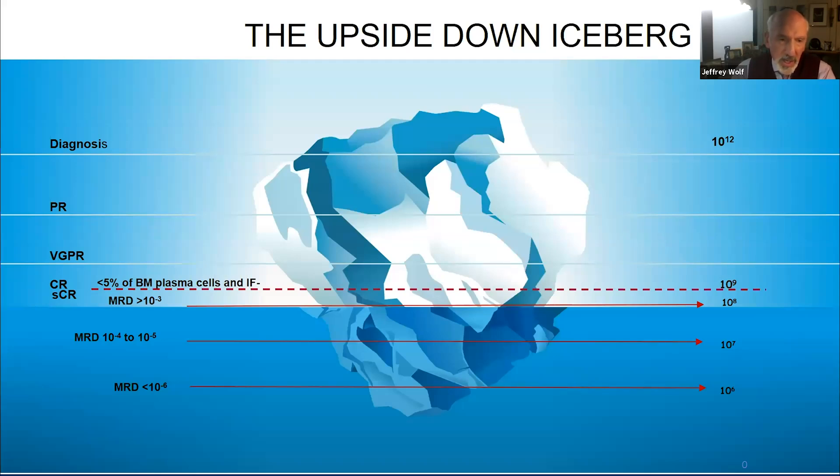As we treat, we melt that iceberg. And all of you are familiar with the ways in which we measure this with M spikes and light chain measurements and heavy chain measurements. We refer to things like a partial remission or a very good partial remission, VGPR, as that iceberg melts. So if half of the disease is gone by M spike measurement, it's a partial response. If 90% is gone, it's a very good partial response or VGPR.